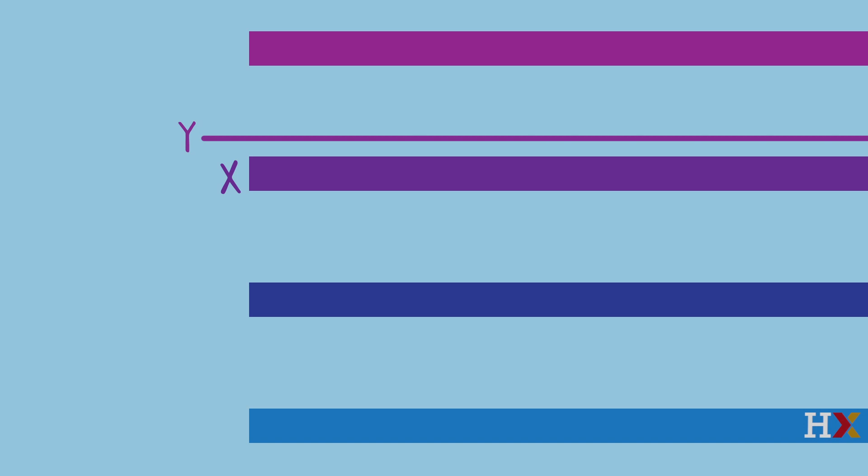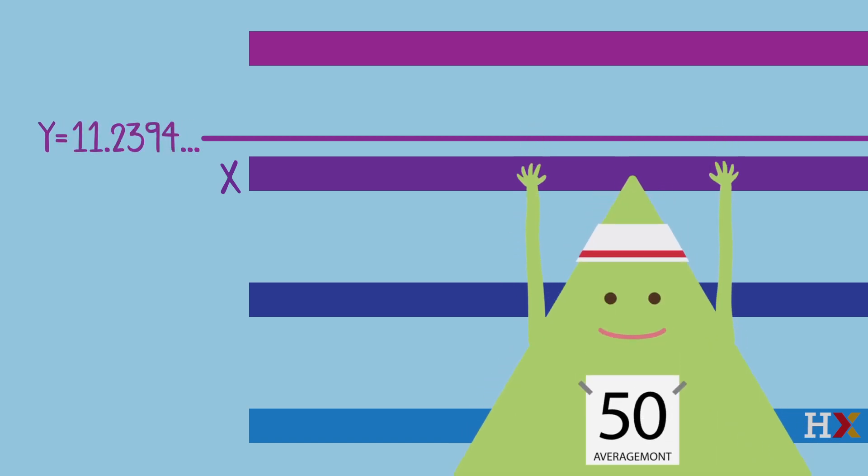For example, just now John reached 11.2394 dot dot dot, and then he grabbed onto bar 11.